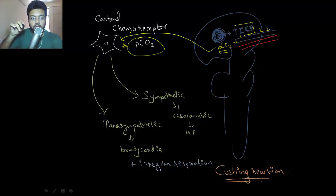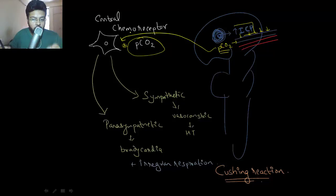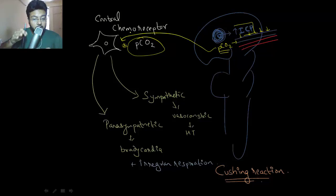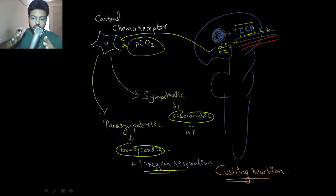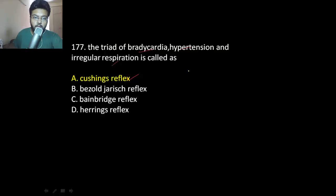What's different from the baroreceptor reflex is that the central chemoreceptor simultaneously activates both the sympathetic and parasympathetic nervous systems. The sympathetic nervous system causes vasoconstriction via the vasomotor center, creating hypertension. The parasympathetic nervous system via the cardio vagal system slows the heart, producing bradycardia. Combined with irregular respiration, we get a triad of hypertension, bradycardia, and irregular respiration — this is called the Cushing reaction, especially seen with intracranial tumors.